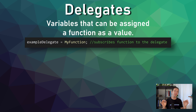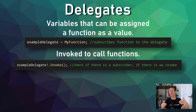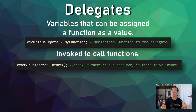Delegates can be thought of as a variable that can be assigned a function as a value. A delegate can hold a reference to a function, and then the delegate can be invoked, and that function will be called. Now that may seem strange — why wouldn't you just call the function itself? But you can imagine a scenario where you may want to change what happens when a particular key is pressed. One way to do that would be to invoke a delegate each time that key is pressed, and to reassign what that key does, you simply have to change the function that is subscribed to that delegate. This is easy and hugely flexible.